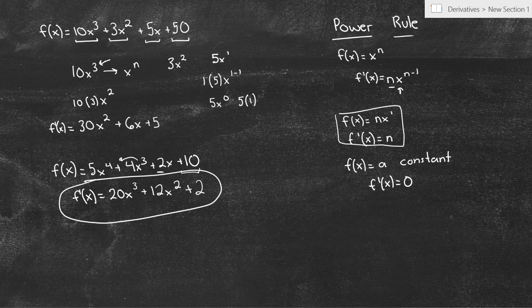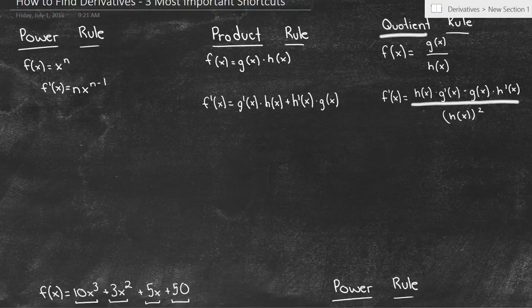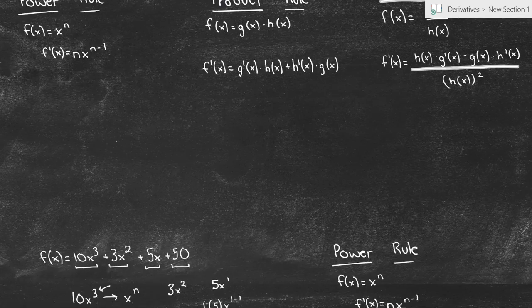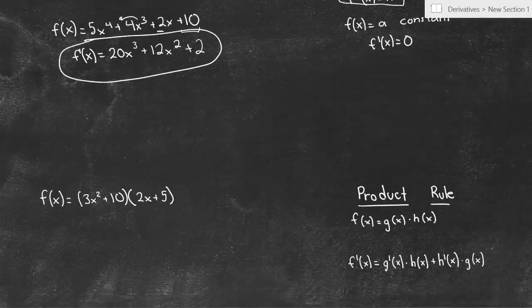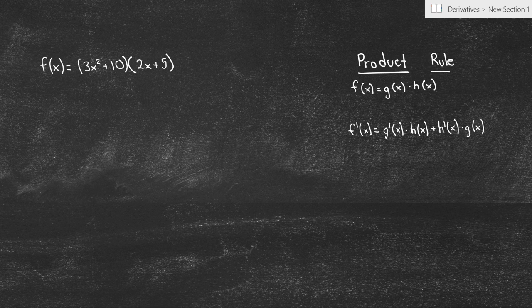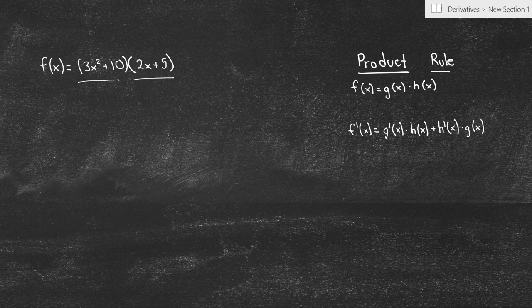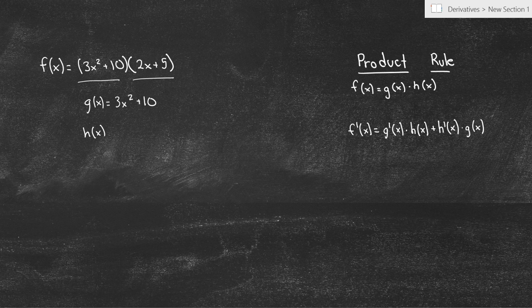That's the power rule — you'll see it everywhere. To do the next two rules, the product and quotient rule, you'll need a good understanding of the power rule. The product rule works when we have the product of two functions. f(x) is the product of two functions, so to find the derivative we break them into g(x) and h(x). We'll say g(x) is 3x² + 10 and h(x) is 2x + 5.